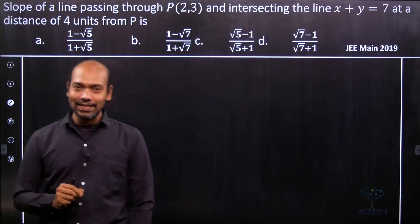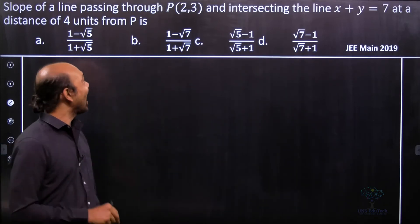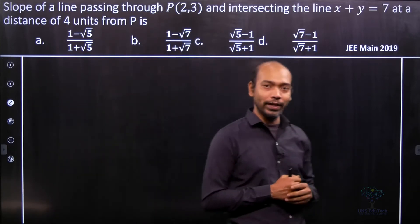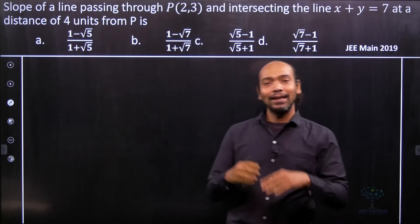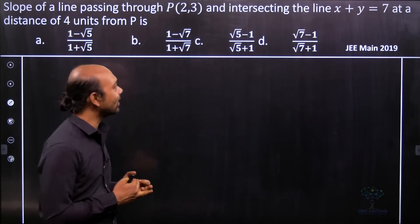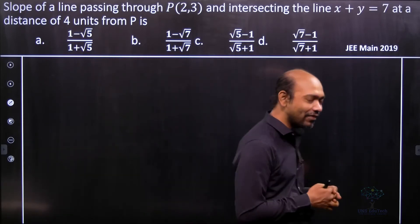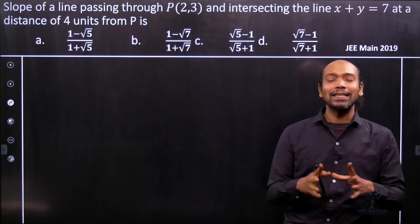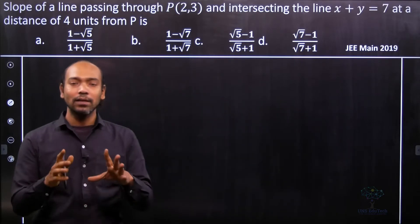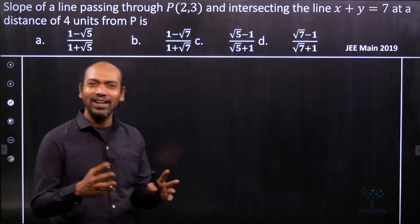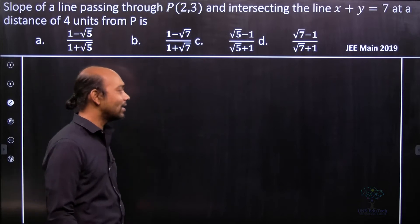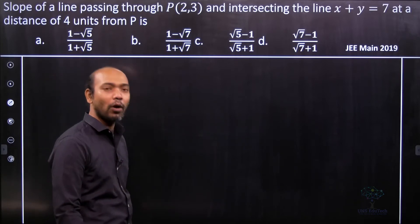So what it says: we have a line that passes through the point (2, 3), and the line is intersected with another given line x + y = 7 at some point. Then the distance between that point is... it's become a little complicated, right, so let's see that in a proper figure.